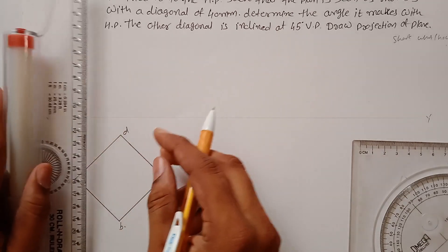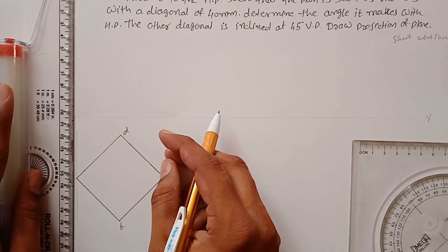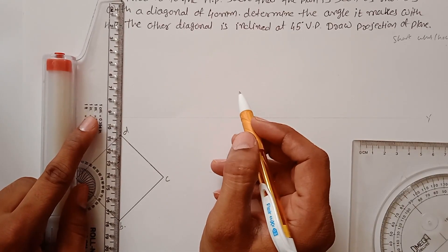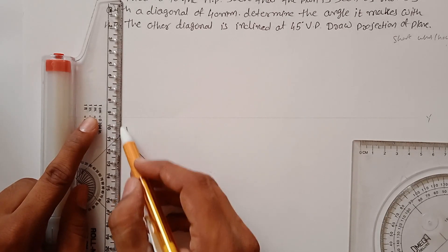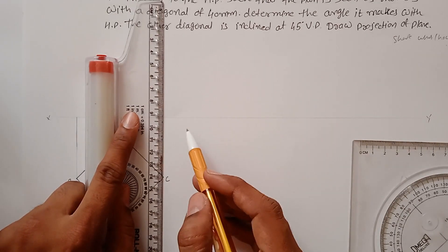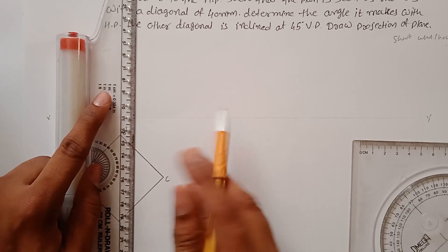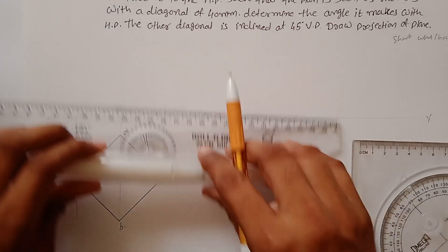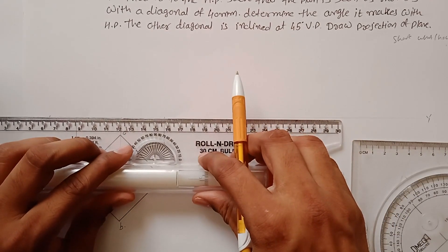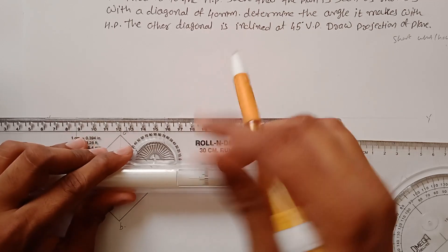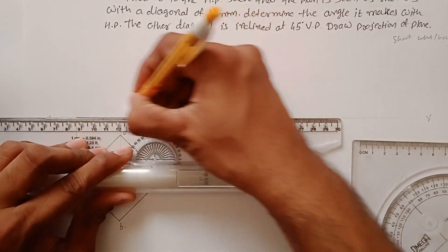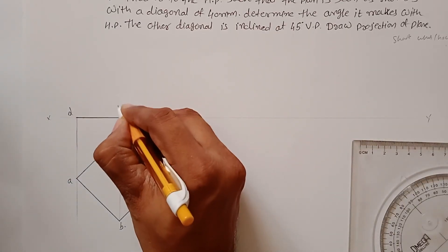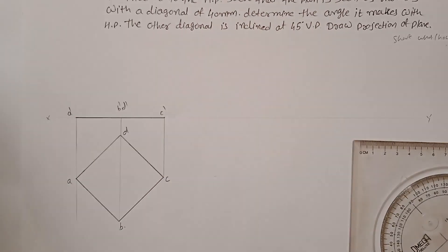Now you have to draw the projections. The projection is already drawn. B and D must lie on the same line, and point C completes the front view as a straight line. Give names to them: this is A dash, this is B dash D dash, and this is C dash.